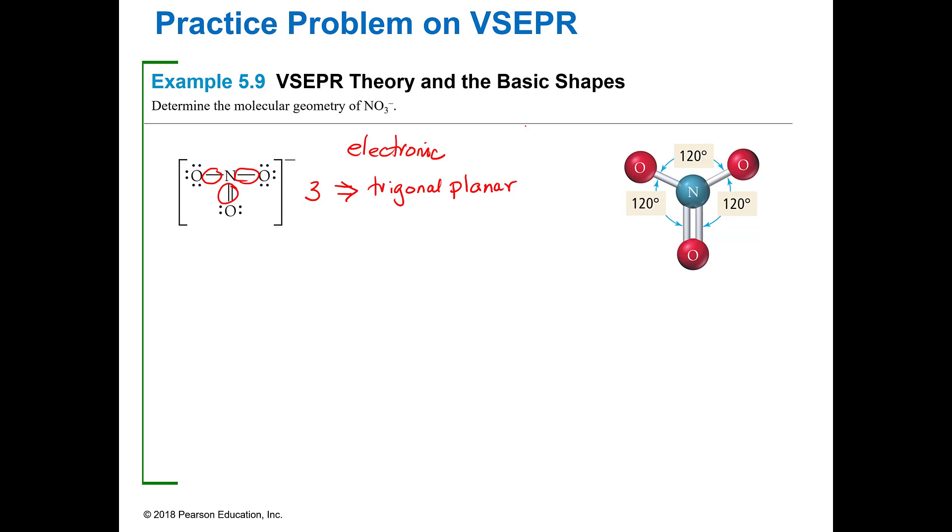What does that look like? It looks like a triangle on the page. Trigonal planar. And you've got the N here. And then it's going to be connected to the O's like that. So trigonal planar means a triangle.